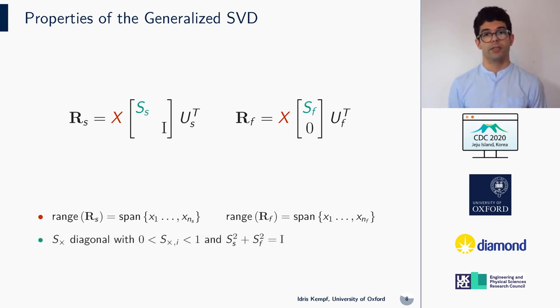The generalized singular values also play a different role than the singular values in the context of an SVD. For the SVD, the singular values have the notion of an amplification in the direction of the singular vectors, which have unit length and are orthogonal. Here the amplification is contained in the columns of X, and the values of the matrices SS and SF are positive, but smaller than 1, and the sum of the squared matrices adds up to identity. They measure the relative significance of vector Xi in each of the matrices. If the generalized singular values are equal, then both matrices contribute equally to the output direction.